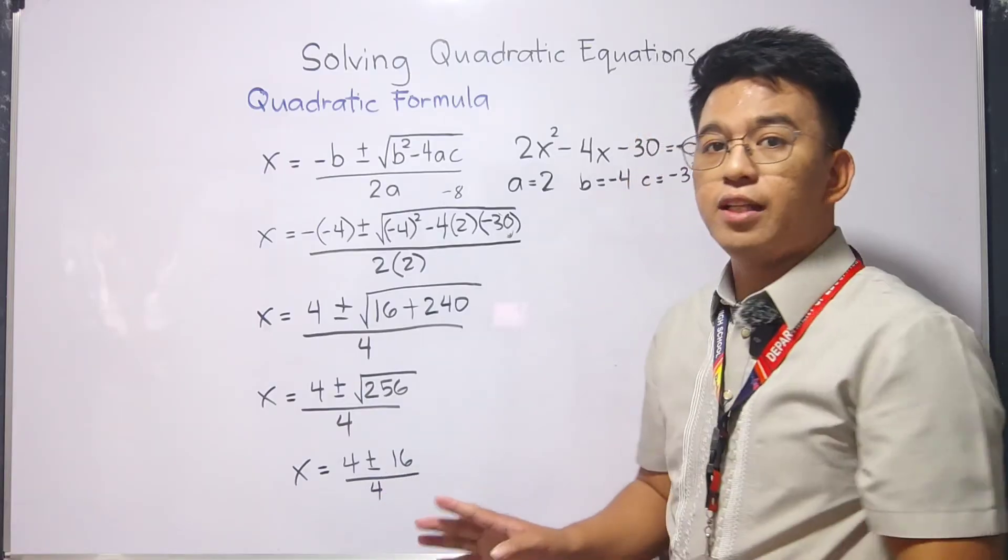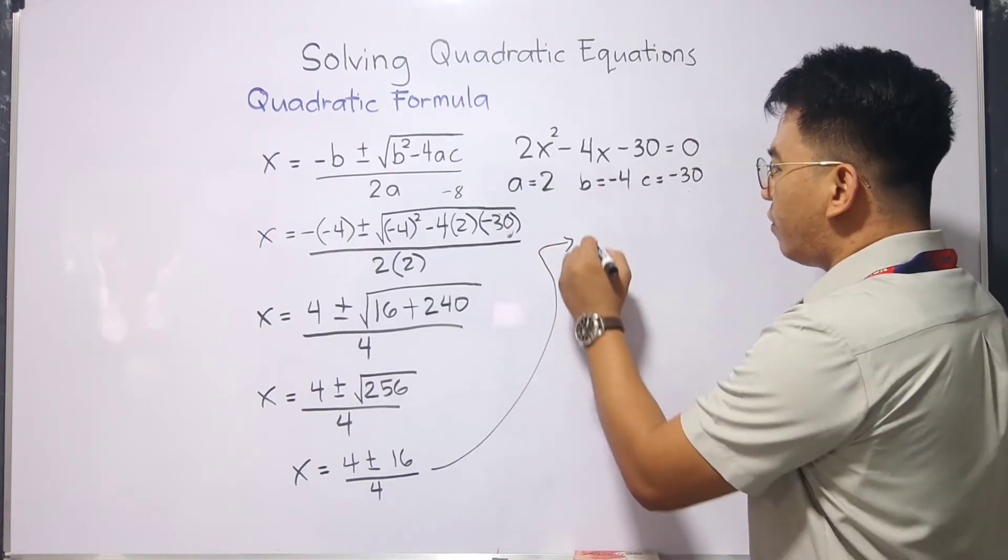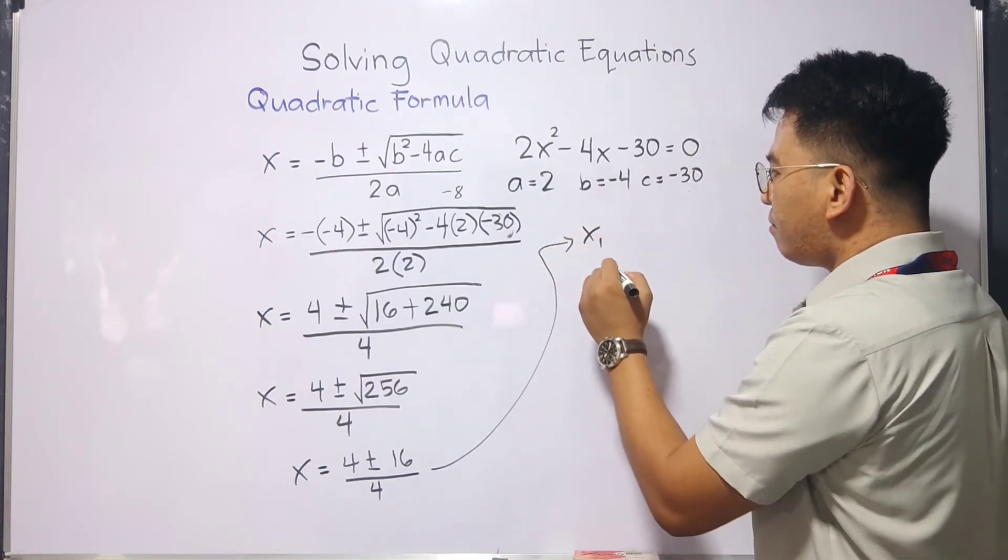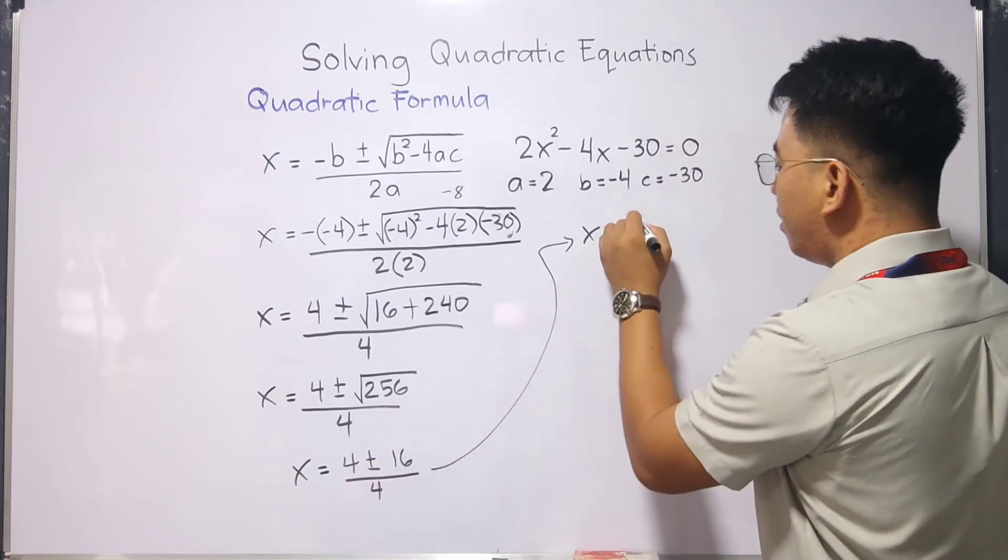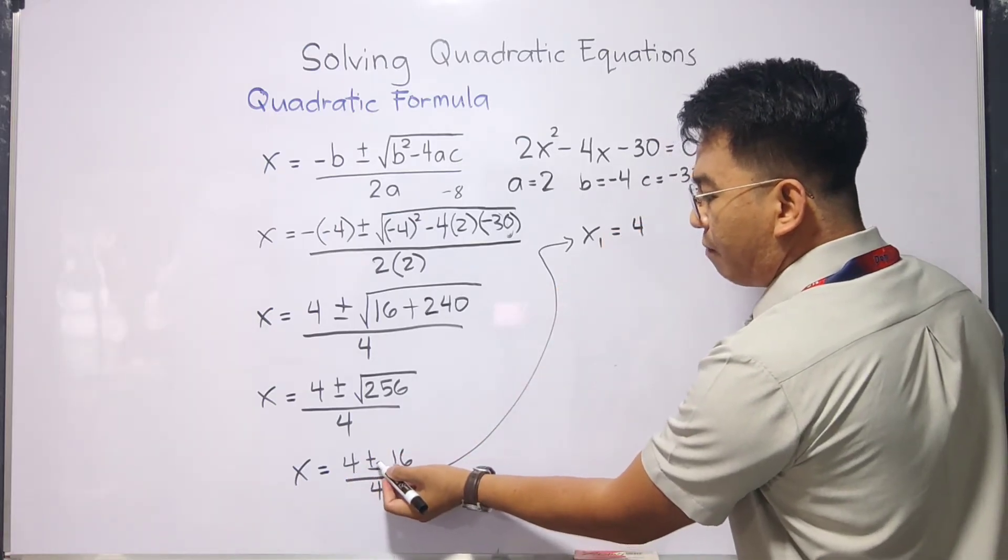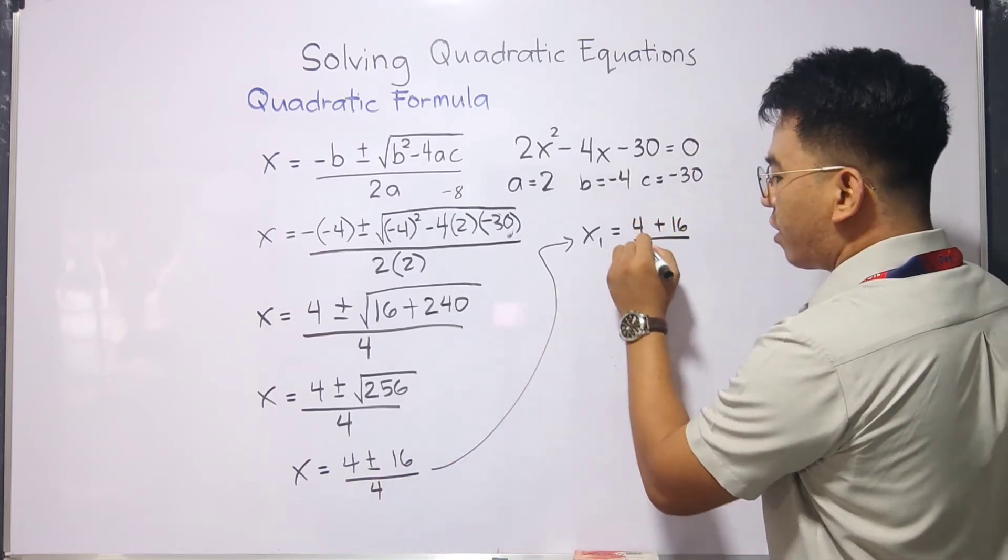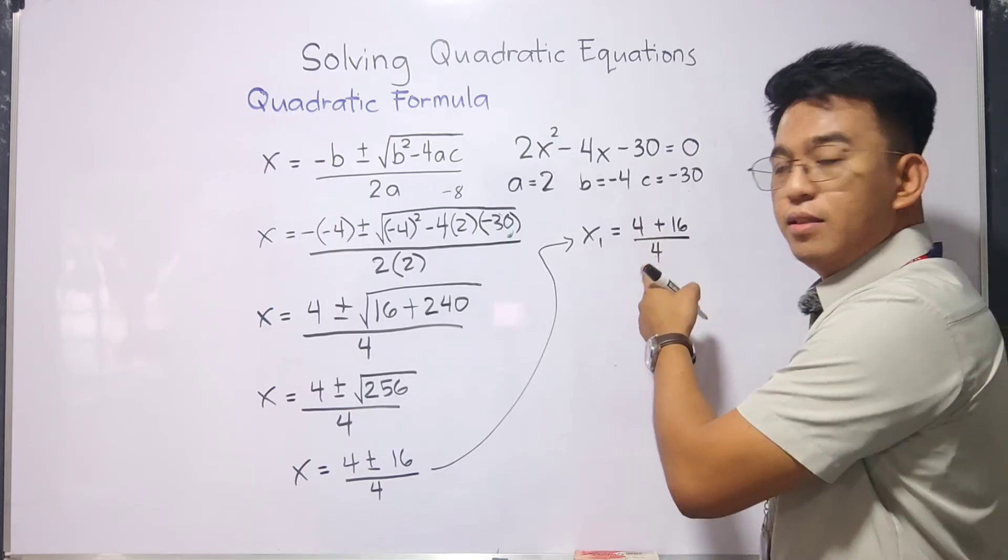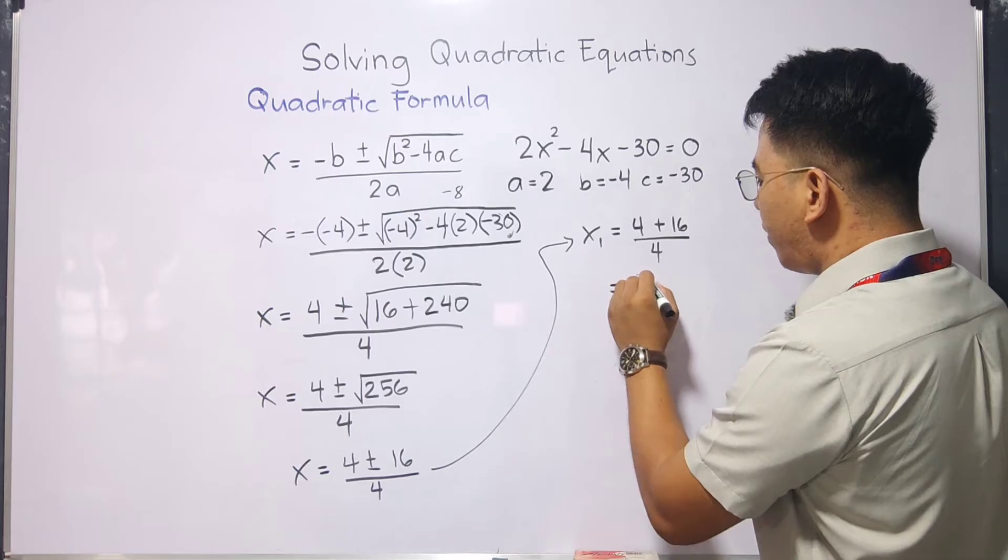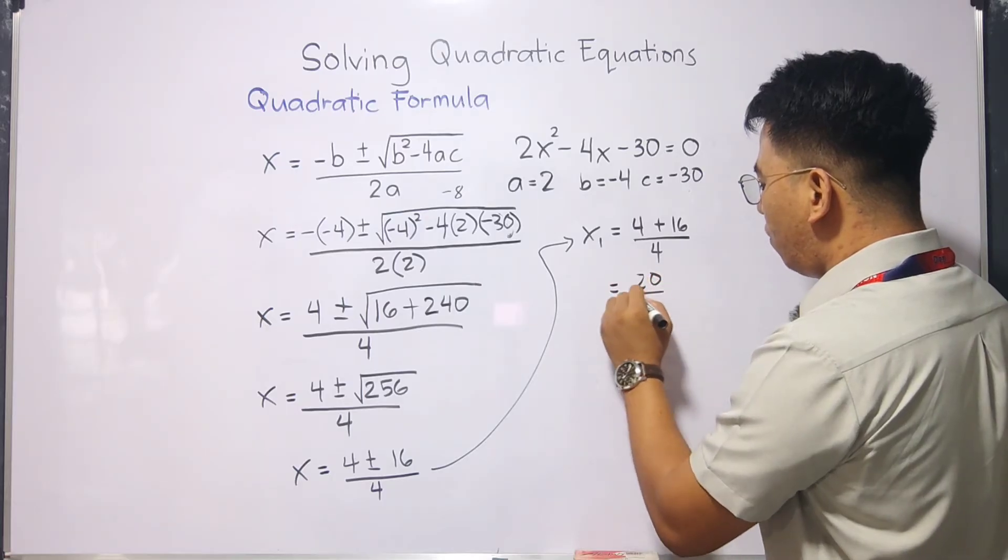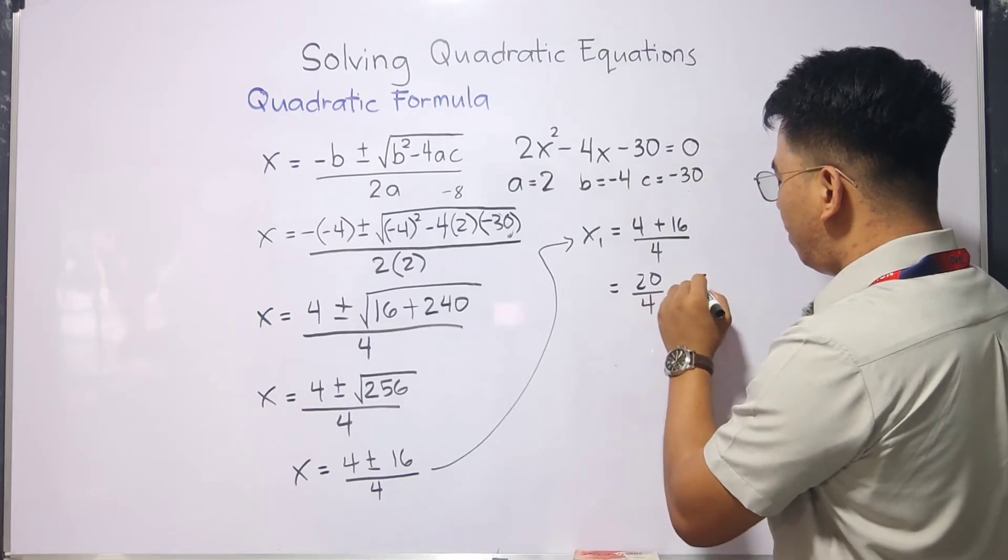When you are done simplifying the radical part, we can now solve for the values of x. Let's go here. Let's use this space. Let's start with x sub 1. For the x sub 1, we will use 4. Then, this is positive negative, positive first. We have plus 16 over 4. Simplify this part. You have 4 plus 16, which is 20, over 4. And 20 divided by 4, that is equal to 5.